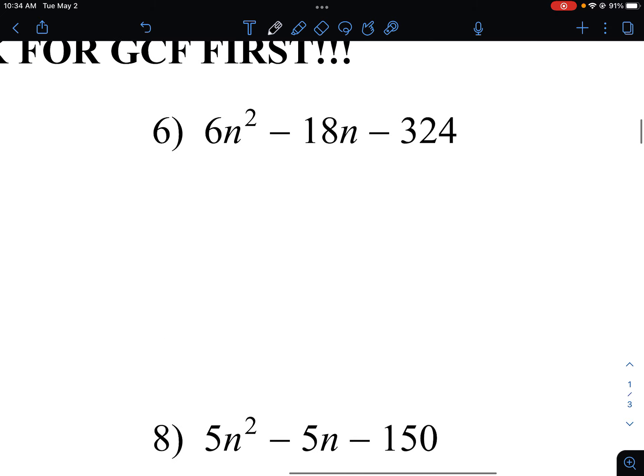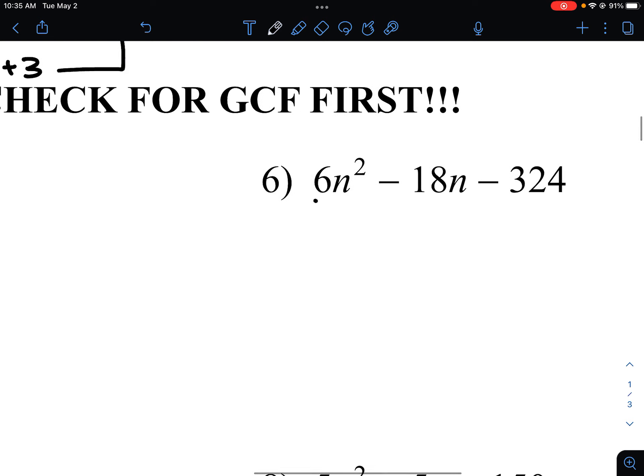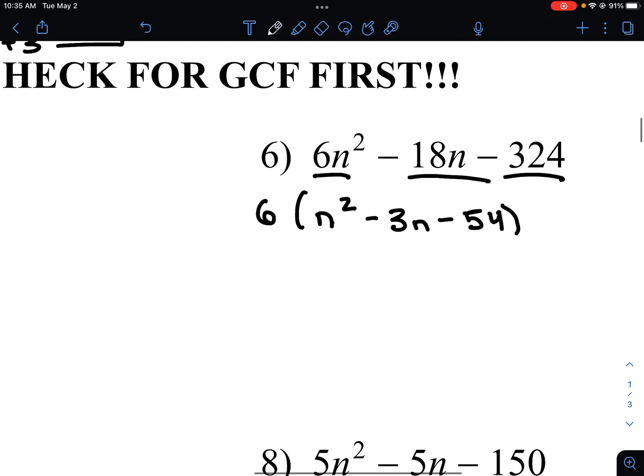Another one here. So we always want to check for the GCF first. So thinking about 6, 18, and 324, those all have a greatest common factor of 6. So we can bring that 6 out and express this as N squared. 18 divided by 6 is 3N. And 324 divided by 6 is 54. Great idea to have a calculator with you. That is the first step. Then we need to write out the factors of 54.